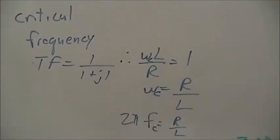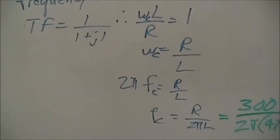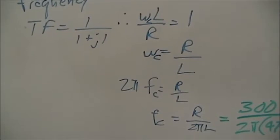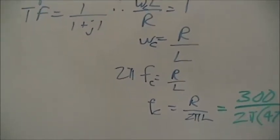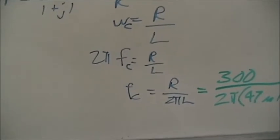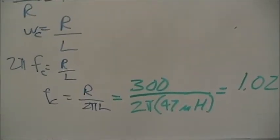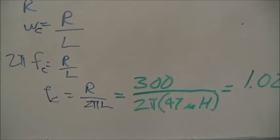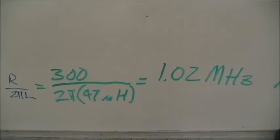That leads to a critical frequency of R over L, which leads to a critical Fc value. 2πFc equals R over L, and Fc equals R over 2πL. A 300 ohm resistor and a 47 microhenry inductor leads to a critical frequency of 1.02 MHz.